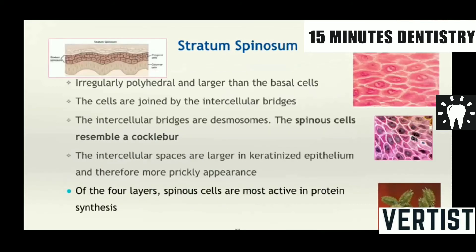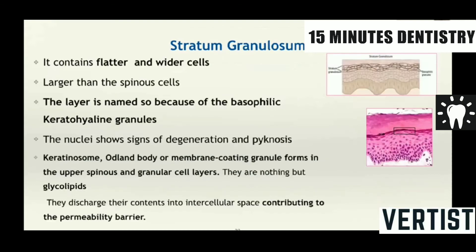Coming to the next layer, it is called as stratum spinosum. These cells are irregularly polyhedral cells, large cells. They have a large intercellular space and because of that, when the processing is done, they have a prickly appearance. And these cells are said to be most active in protein synthesis.